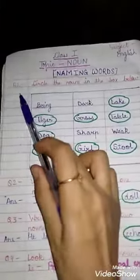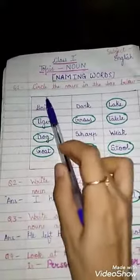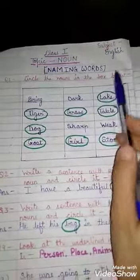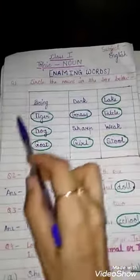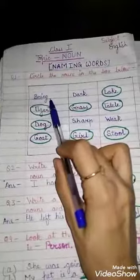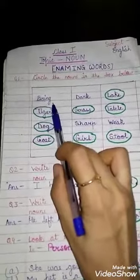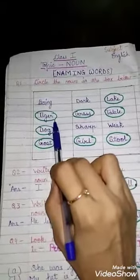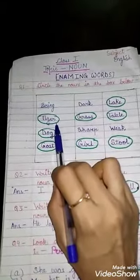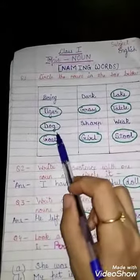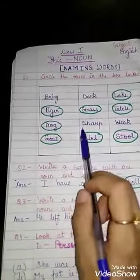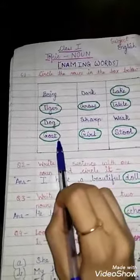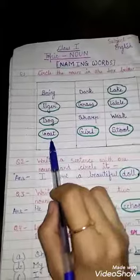So now let's see the exercises of noun, or naming words. The first question is: circle the noun in the box below. These are the words — humay ismein noun dhundna hai. 'Bring' means lana, so it's not a noun. 'Tiger' is a name of an animal, so yeh noun hai. 'Dog' is a name of an animal, so it's also a noun. 'Goat' is an animal, so it's also a noun.